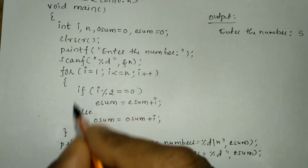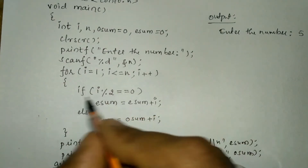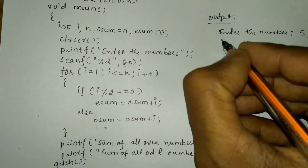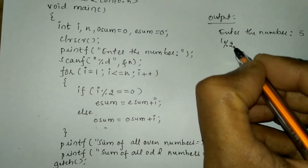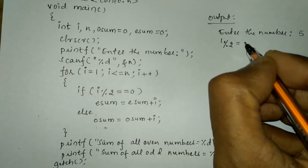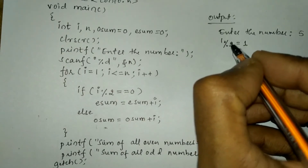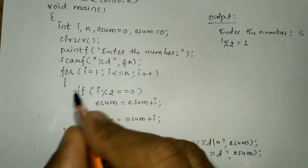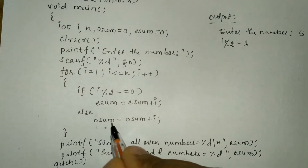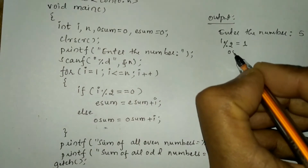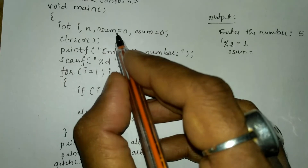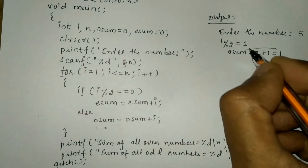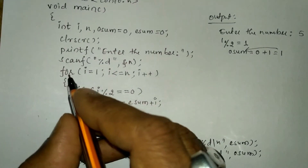The control enters the body of the for loop. For i = 1: 1 modulo 2 gives remainder 1, since 1 is less than 2 — numerator less than denominator — quotient is 0, remainder is 1, which is not equal to 0, so the condition is false. Control transfers to the else part: osum = osum + i, so osum = 0 + 1 = 1. Control returns to the for loop, incrementing i to 2.